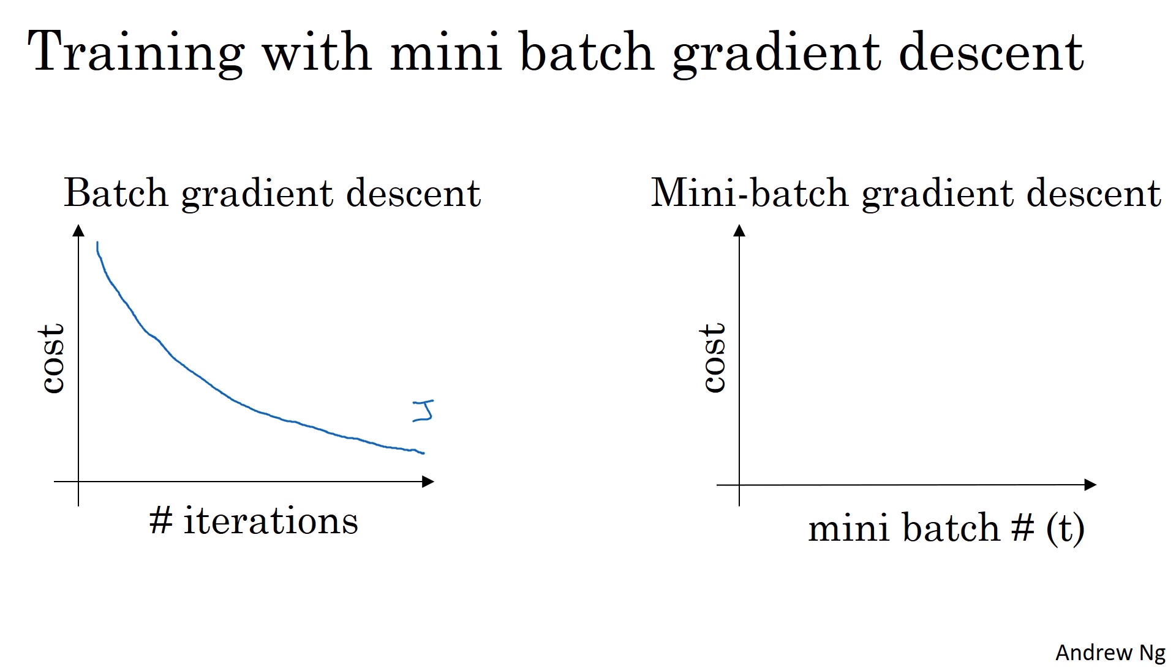In particular, on every iteration you're processing some xt, yt. And if you plot the cost function jt which is computed using just xt, yt, then it's as if on every iteration you're training on a different mini-batch. So if you plot the cost function J, you're more likely to see something that looks like this. It should trend downwards, but it's also going to be a little bit noisier.